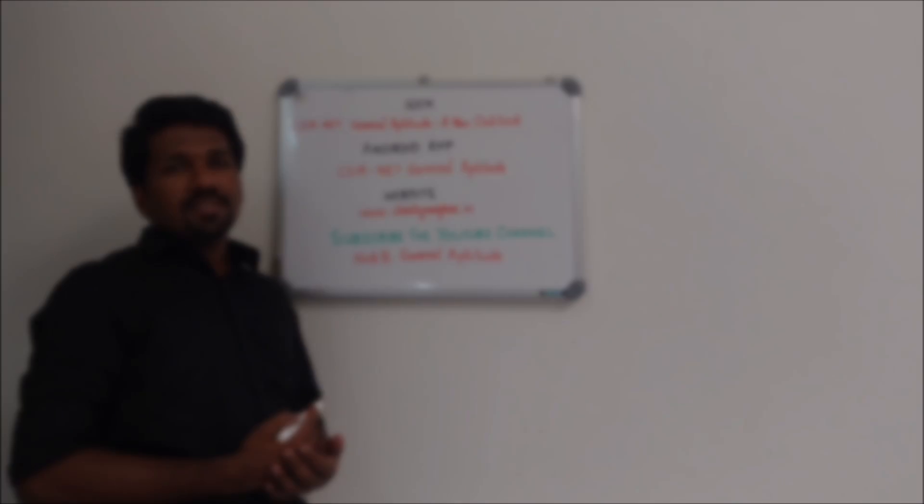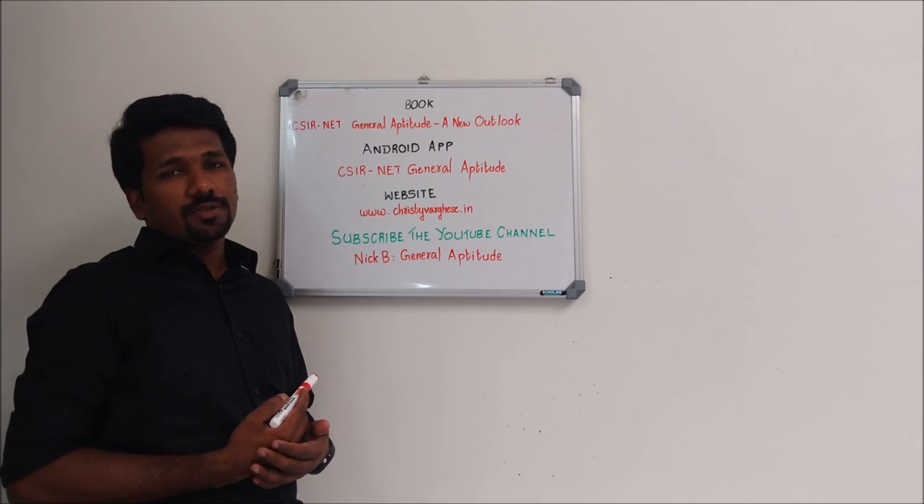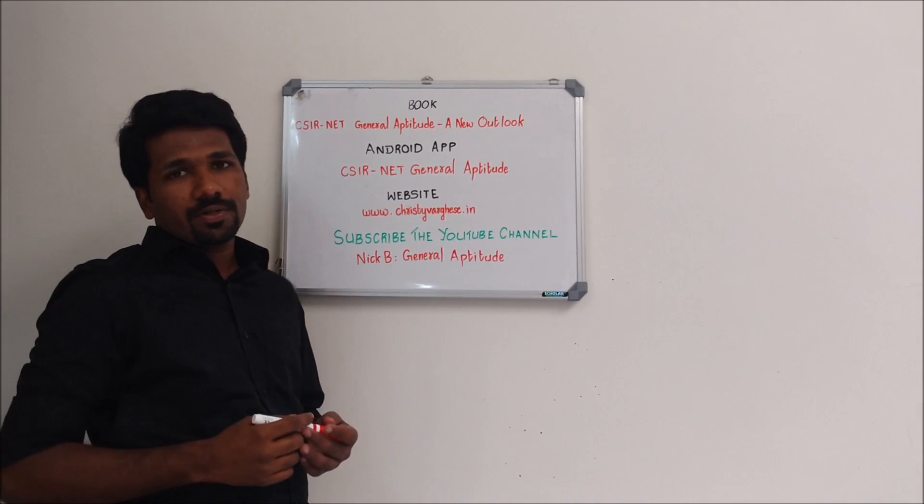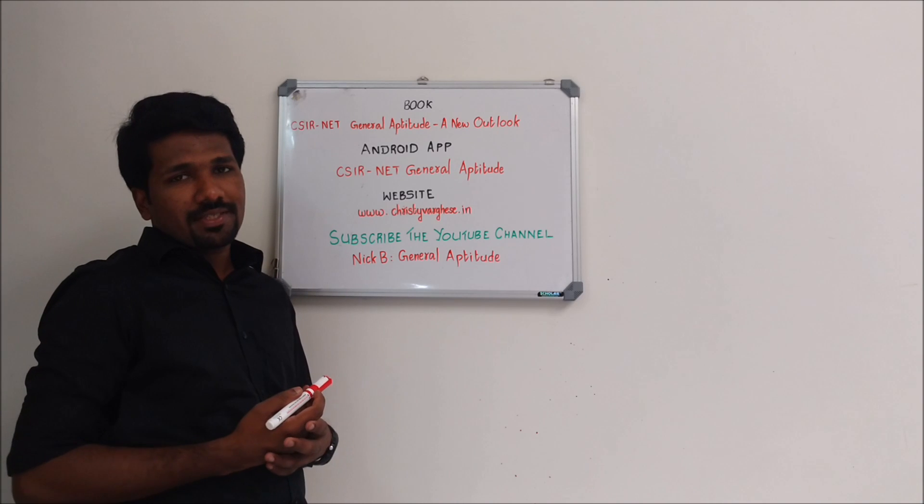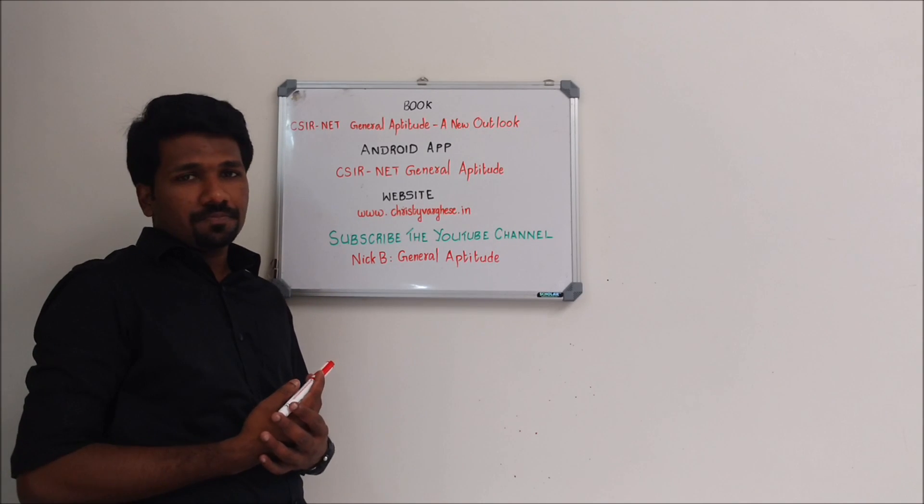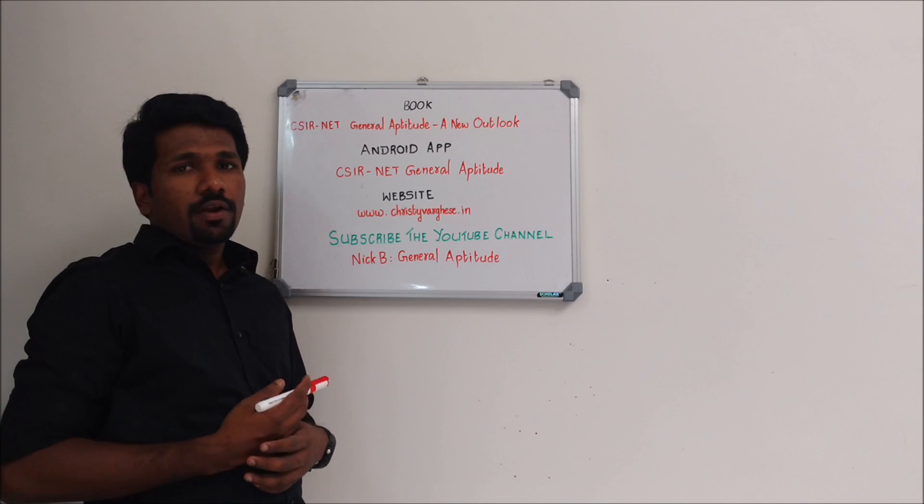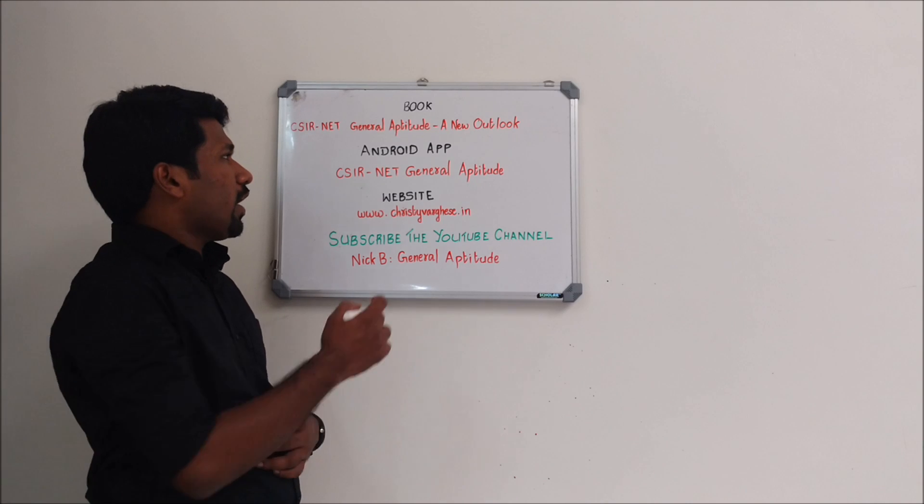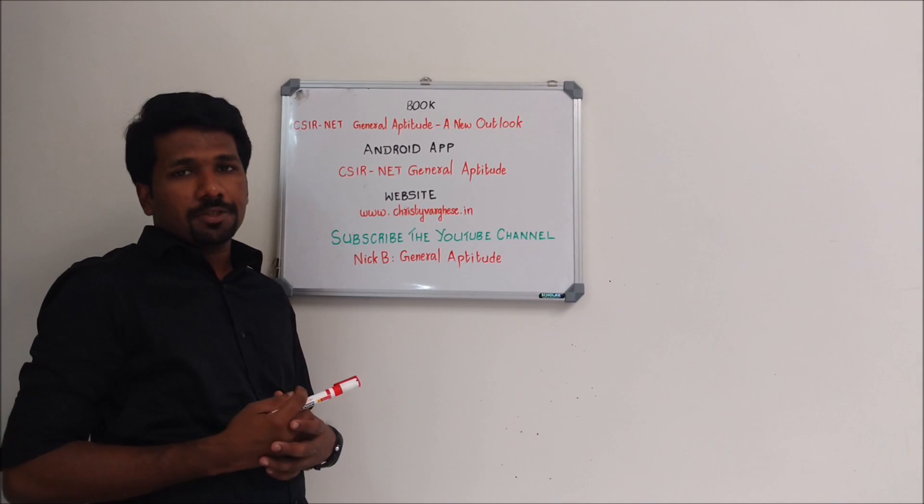This video series is primarily released as an additional resource for the readers of the book, CSIR NET General Aptitude New Outlook. If you don't have a copy of the bestseller book, you can buy it from Amazon, Flipkart or Paytm. If you want more study materials on General Aptitude, you can download our free Android app, CSIR NET General Aptitude from Play Store.